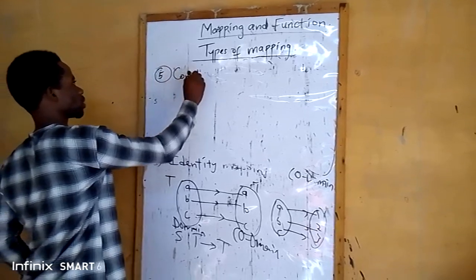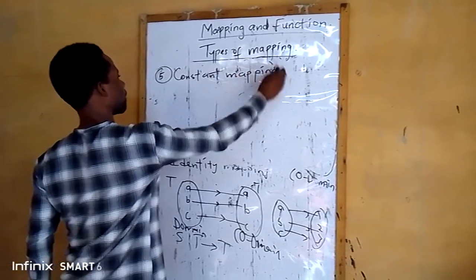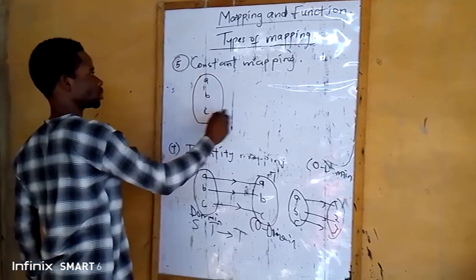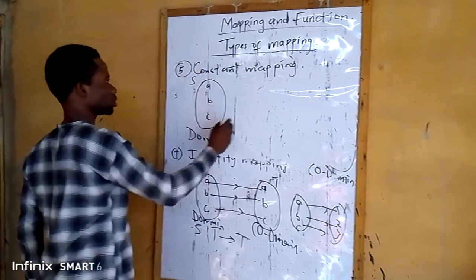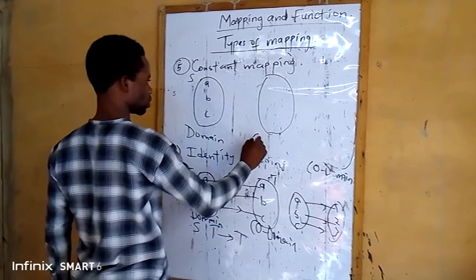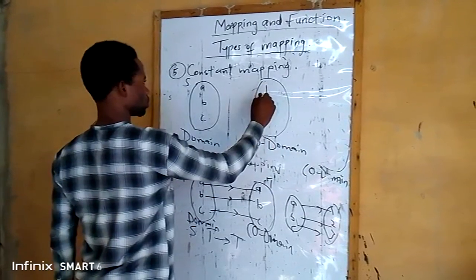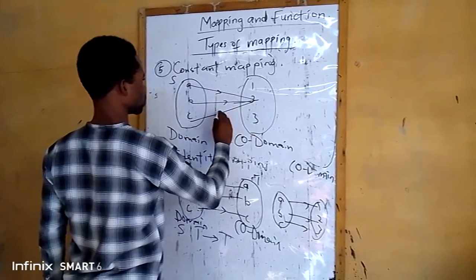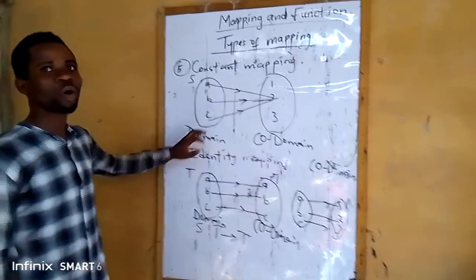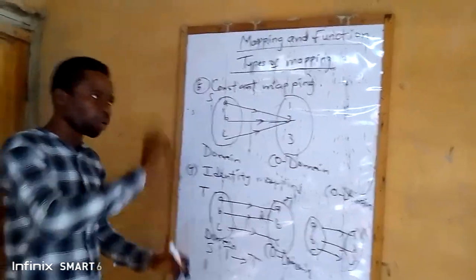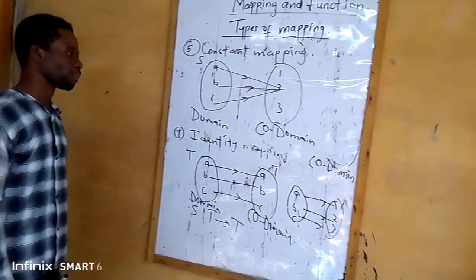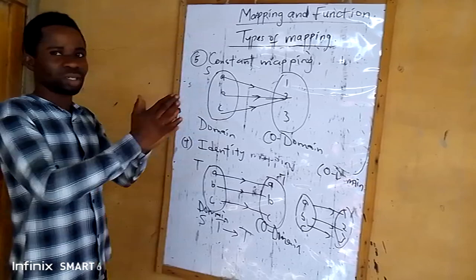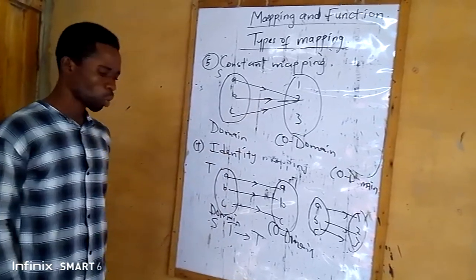The fifth type is what we call constant mapping. In the situation where all the elements in the domain pair with one element in the co-domain, we call it constant mapping. That is a situation whereby all the elements in the domain pair with one in the co-domain — we call that constant mapping.